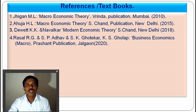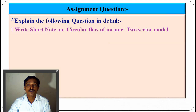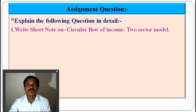References for your study include: Imaging and Macroeconomic Theory, HLVJ Macroeconomic Theory, Dev and Navalkar Modern Economic Theory, and textbooks such as Rasa RG, S.P. Ada, S.K. Portaker, Case Golder Business Economics, and Prashant Publications — these books are available in the market and library. The assignment question on this topic is a very important exam question: write a short note on the circular flow of income, two-sector model. This question should be answered with the help of a diagram. You are expected to cover the meaning of circular flow, the assumptions, and a diagram with explanation.